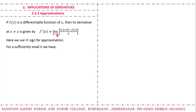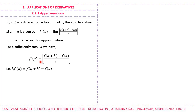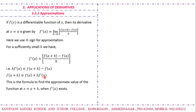This definition is valid as h tends to zero, so h is very very small — it approaches zero but is not equal to zero. For sufficiently small h, we can remove the limit and the equality becomes approximate. After simplifying, we can write: f(a+h) ≈ f(a) + h·f'(a), and this is the formula we will use for evaluating the approximate value of a given function.